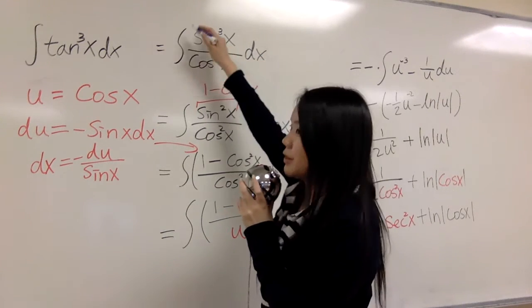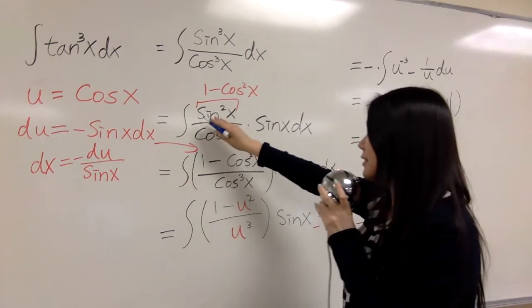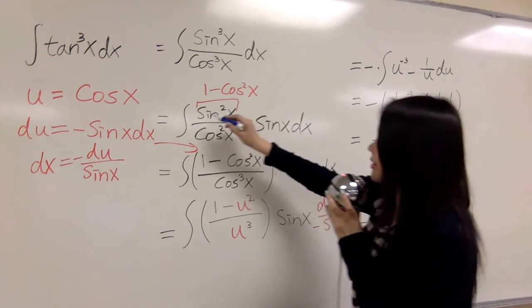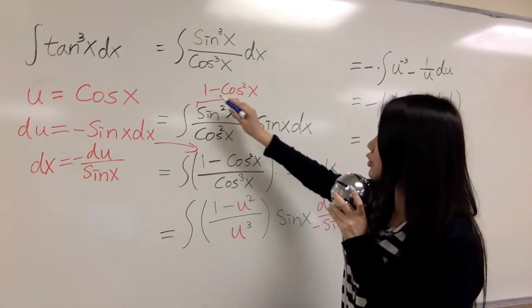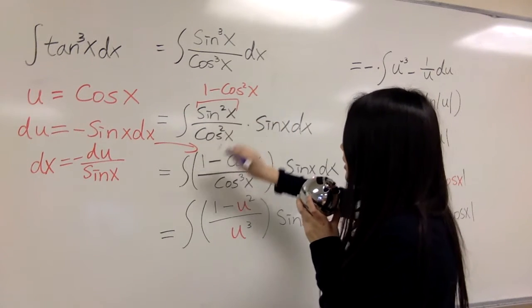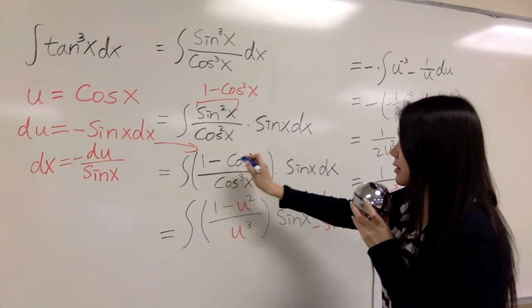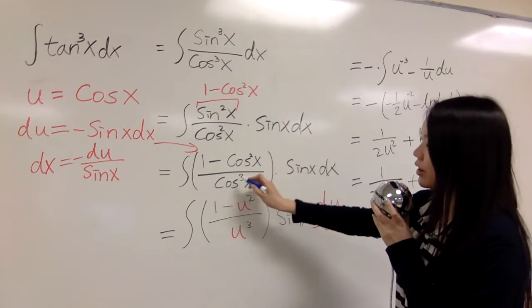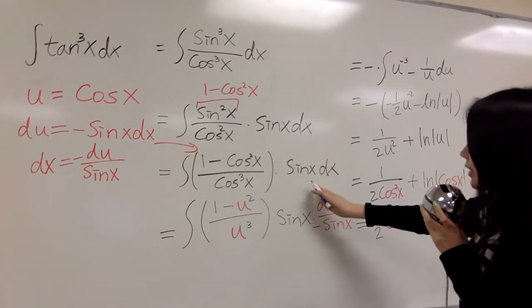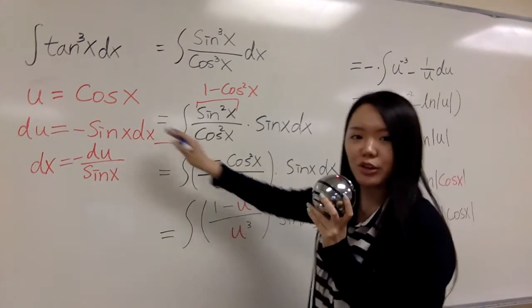Now you can rewrite sine cubed x as sine squared x times another sine x. And sine squared x you can convert it to 1 minus cosine squared x. And now I rewrite it as 1 minus cosine squared x over cosine cubed x, and this one is the same.